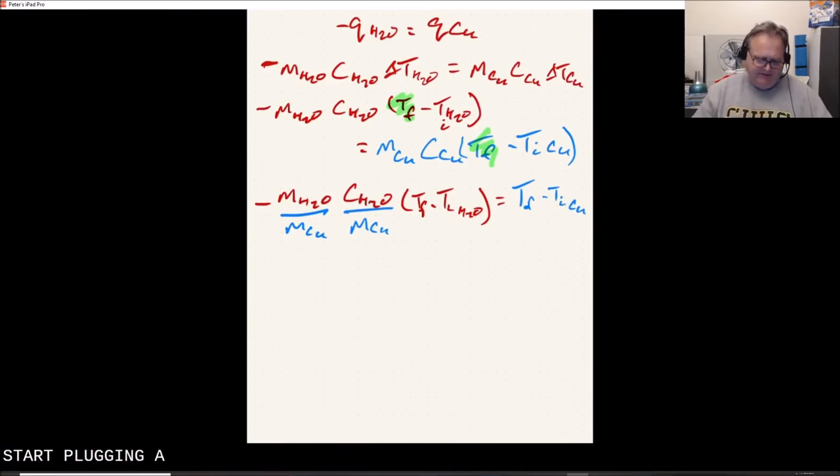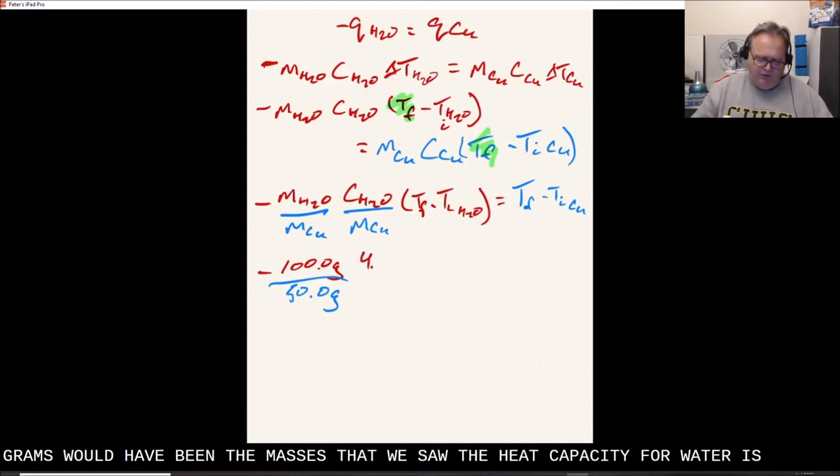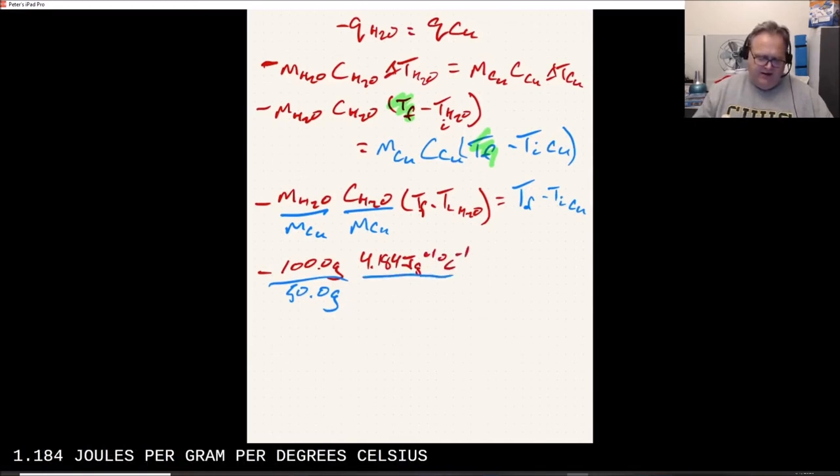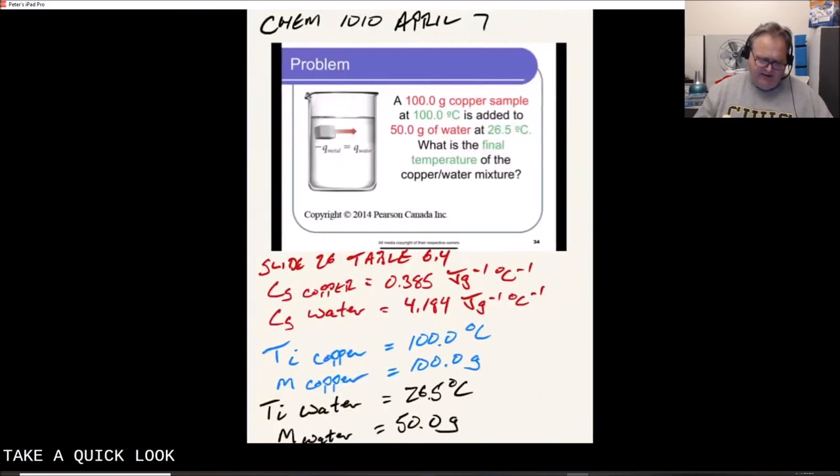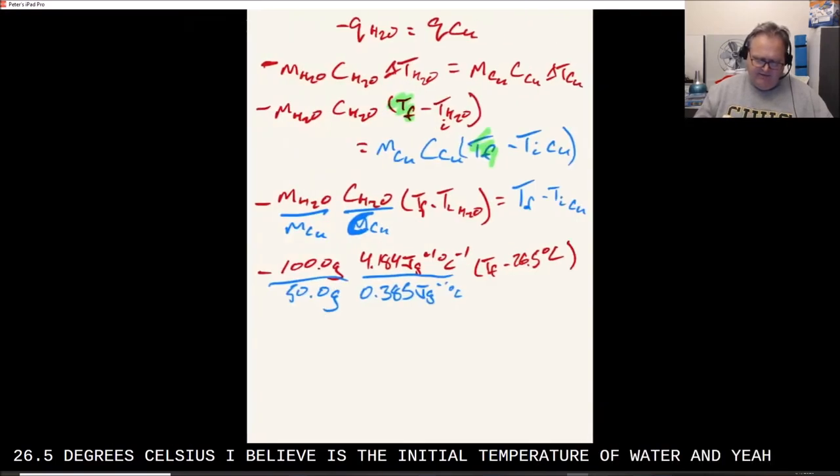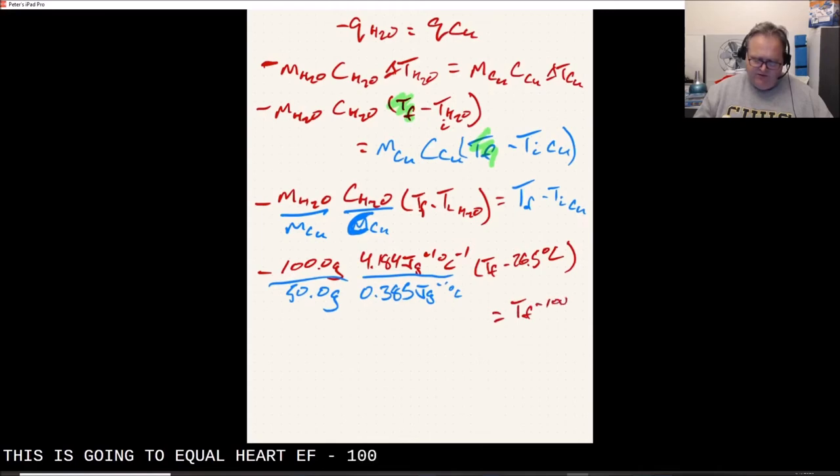So let me just rearrange this a little bit so we can perhaps simplify what's on the go. So this is going to be minus 100.0 grams divided by 50.0 grams. Those would have been the masses that we saw. The heat capacity for water is 4.184 joules per gram per degree Celsius. And here we have 0.385 joules per gram per degree Celsius for copper.